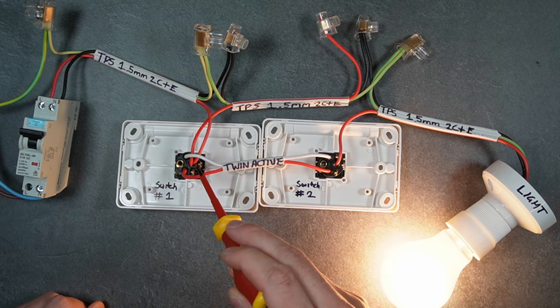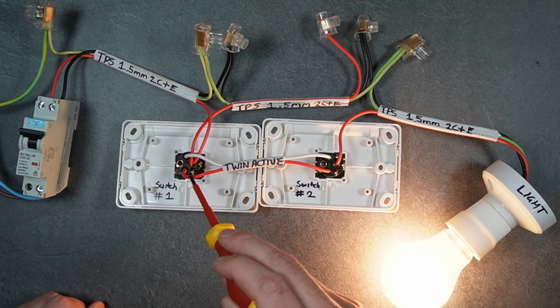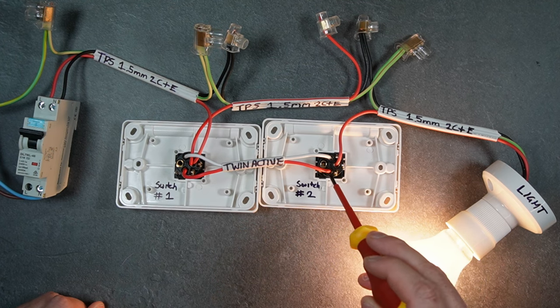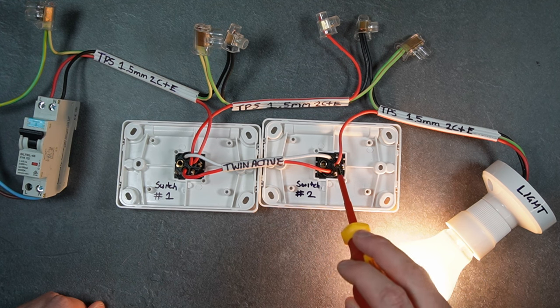The switch is currently in the on position, so it's switching common to one. It will go through the red active conductor to terminal one. This switch is on - switch number two is also turned on - so it'll flow up through the active to the light.